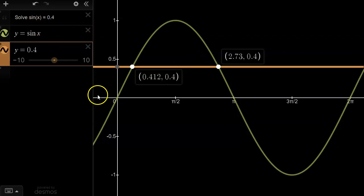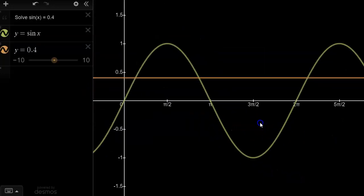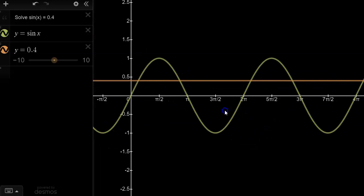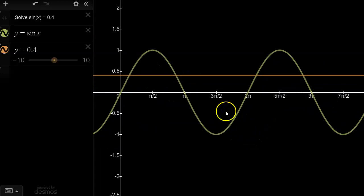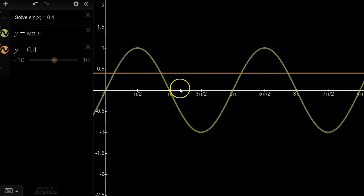Now, if the domain were then extended to 4π, then we can see that we would actually pick up additional points of intersection, and therefore pick up additional roots.